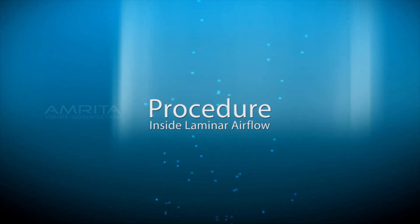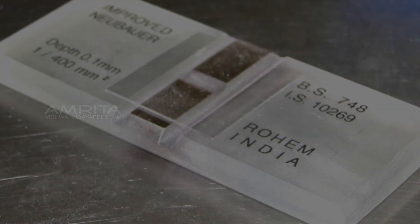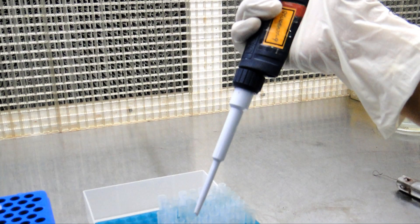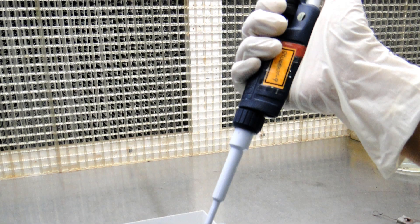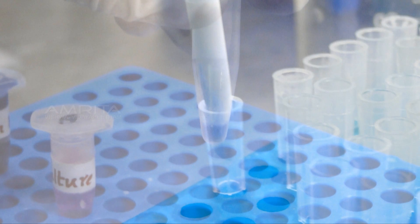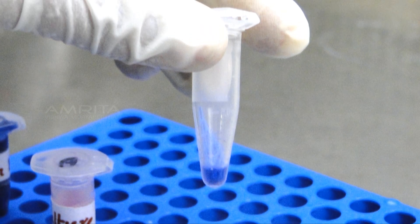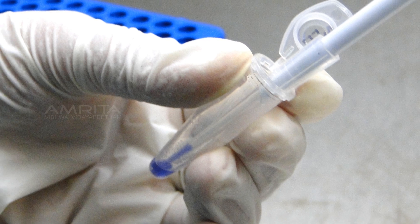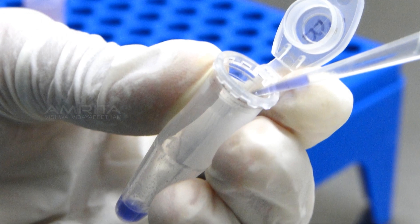Now procedure inside the laminar airflow. Take the hemocytometer and place it inside the laminar airflow. Set the scale of micro pipette to 10 microliters. Insert a new micro pipette tip. Take the vial containing trypan blue cell suspension, open it, and mix the suspension with micro pipette. Take 10 microliters of the cell suspension.